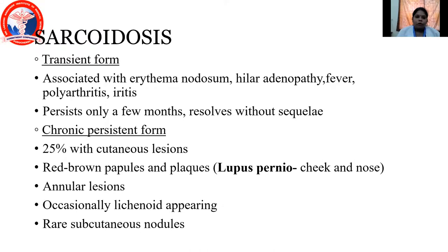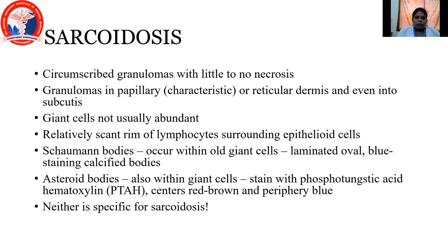Chronic persistent forms have 25% cutaneous lesions. They have red-brown papules and plaques, which is lupus pernio, where the lesions are seen in the cheek and nose. They also have annular lesions, occasionally lichenoid-like in appearance, and they present very rarely as subcutaneous nodules. They present as circumscribed granulomas with little or no fibrosis. Granulomas are in the papillary or reticular dermis and even into the subcutaneous. There are no abundant dying cells and there is a scanty rim of lymphocytes surrounding the epithelioid cells. They have Schaumann bodies that occur within the old giant cells, which are laminated, blue-staining calcified bodies.